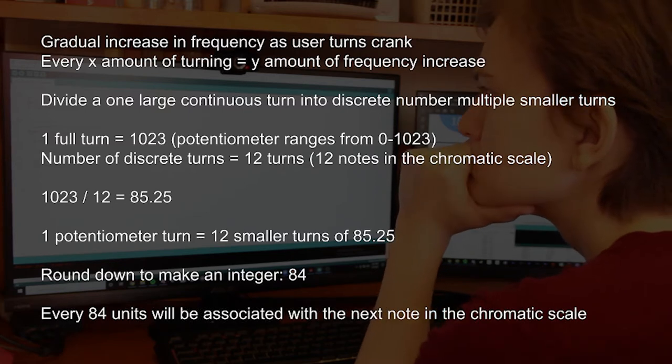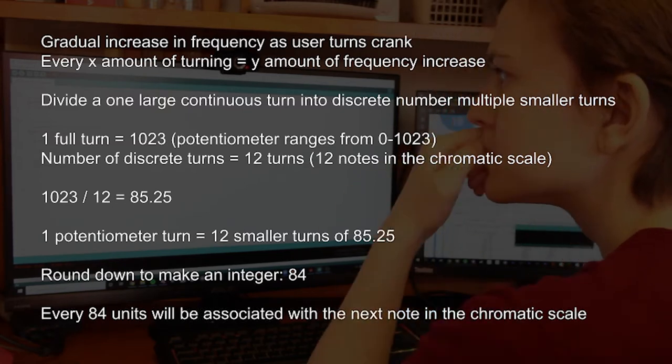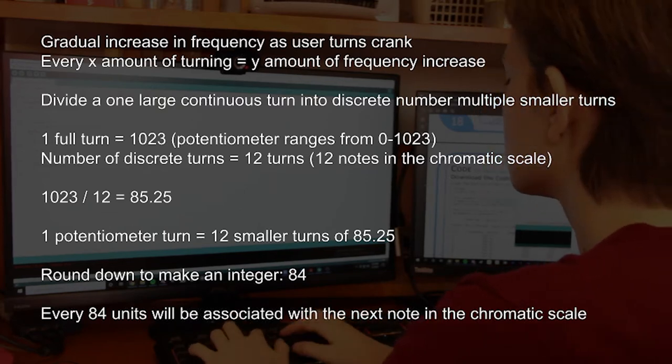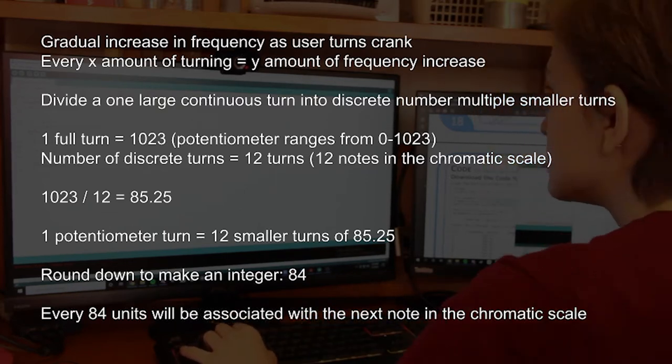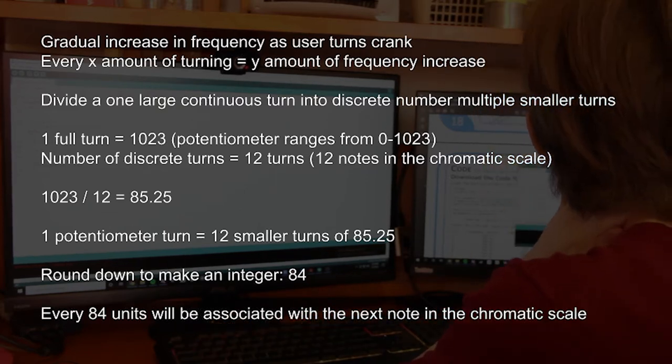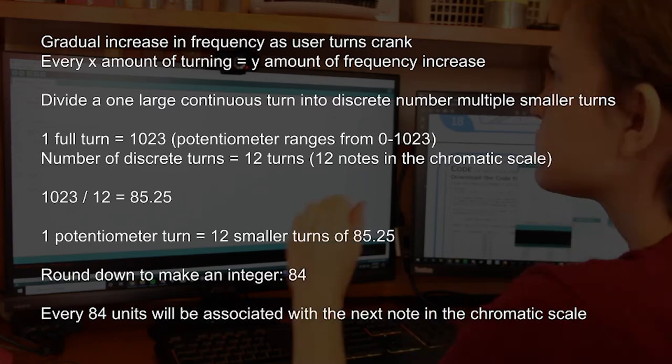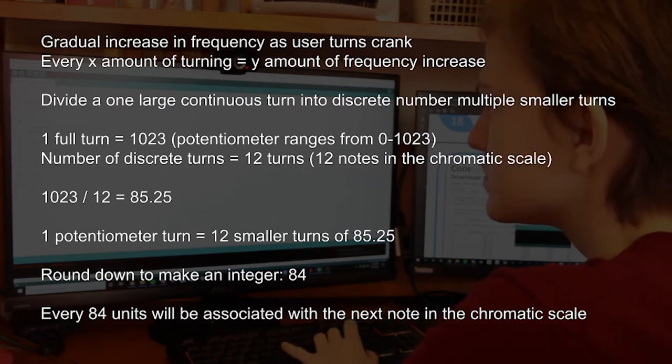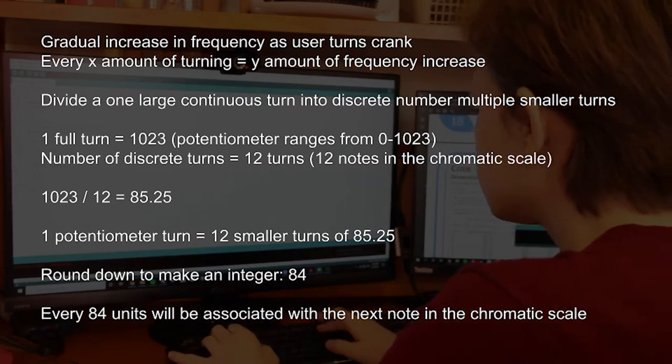I learned from the serial print that the potentiometer ranges from 0 to 1023, and I also know that there's 12 notes in the chromatic scale. So I divided 1023 divided by 12 notes and you get 85.25. So one potentiometer turn is equal to 12 smaller turns of 85.25.